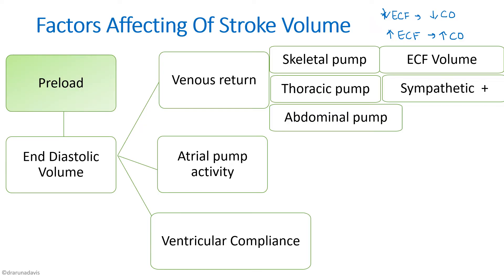Sympathetic stimulation also affects venous return. Our veins have a rich supply of sympathetic nerves, and sympathetic stimulation causes venoconstriction, which increases venous return and thereby increases stroke volume and cardiac output. Conversely, venodilatation from decreased sympathetic stimulation decreases cardiac output.